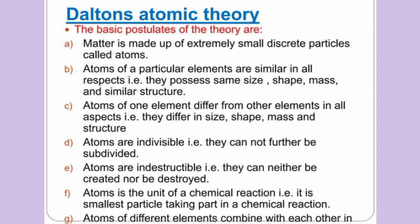The basic postulates of Dalton's atomic theory are: (a) Matter is made up of extremely small, discrete particles called atoms — everything on Earth is made up of atoms. (b) Atoms of a particular element are similar in all respects in terms of their size, shape, mass, and structure. (c) Atoms of one element differ from another element in all aspects — they differ in size, shape, mass, and structure.